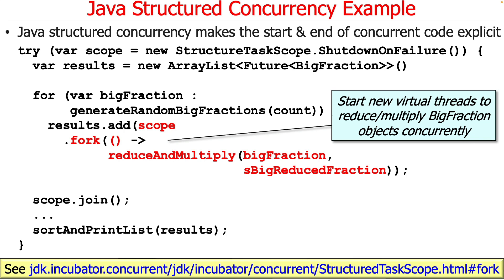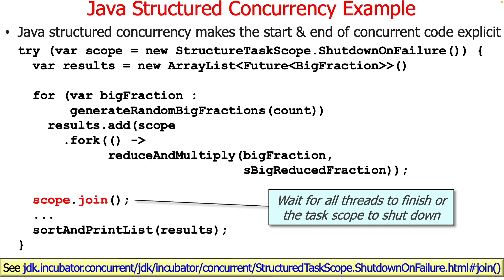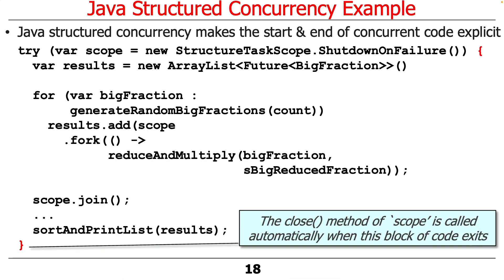We start everything up and they're all off to the races. Then we call join on scope, which is what's called a barrier synchronizer — it says wait here until all of those computations have finished. The flow of control does not proceed past join until all calls are done or an exception is thrown. Assuming everything goes well, we then have our results and can sort and print them. The key point is that we don't leave this scope until all the computations are done, thereby enclosing the subtasks within a syntactic scope.